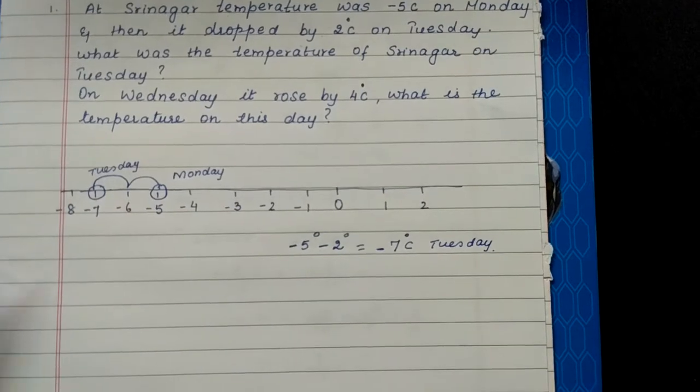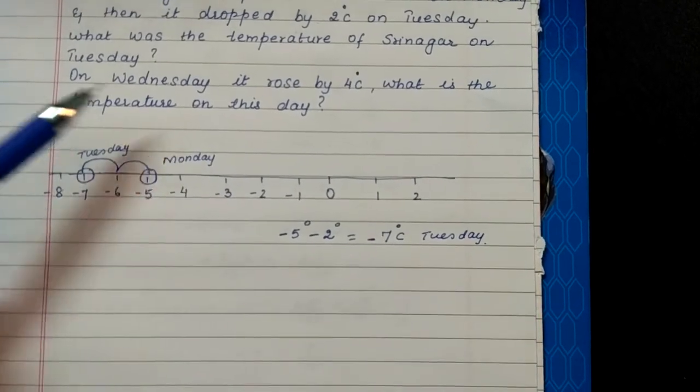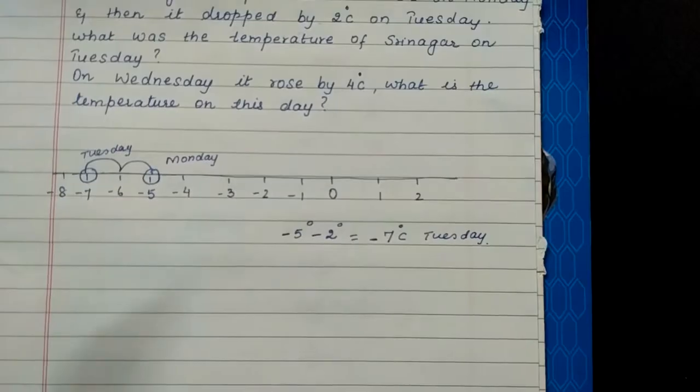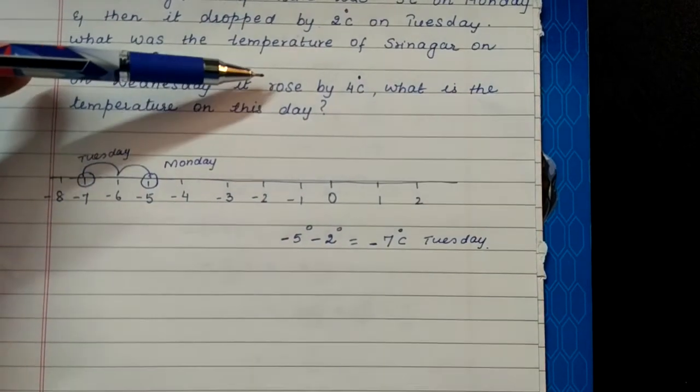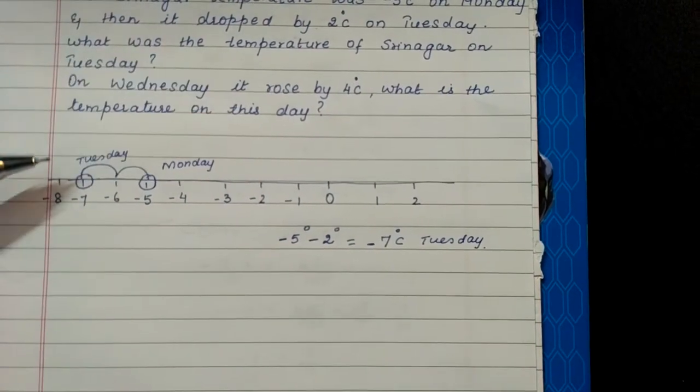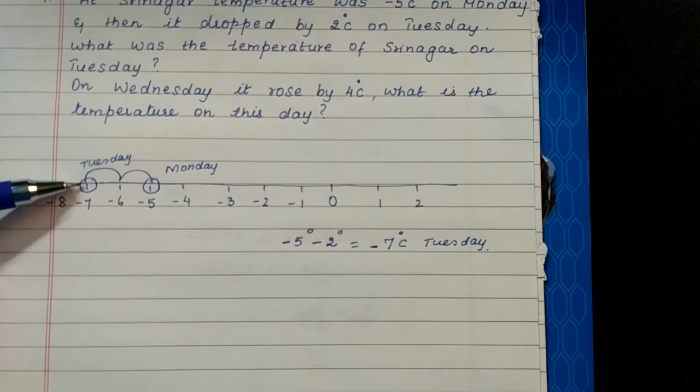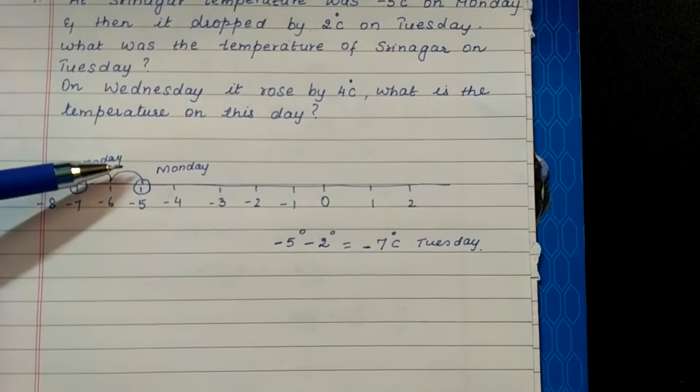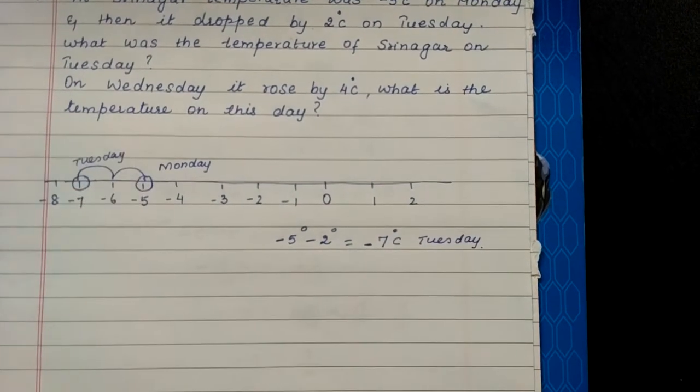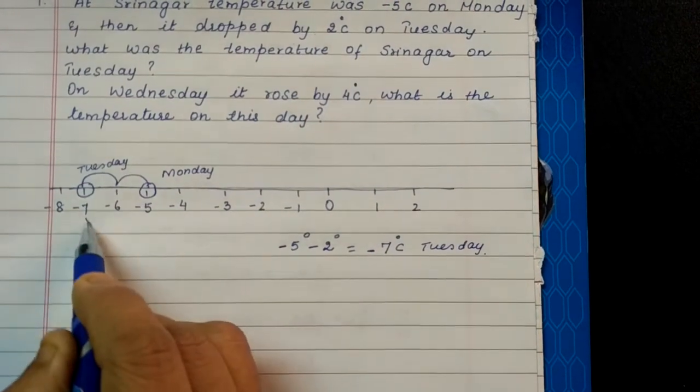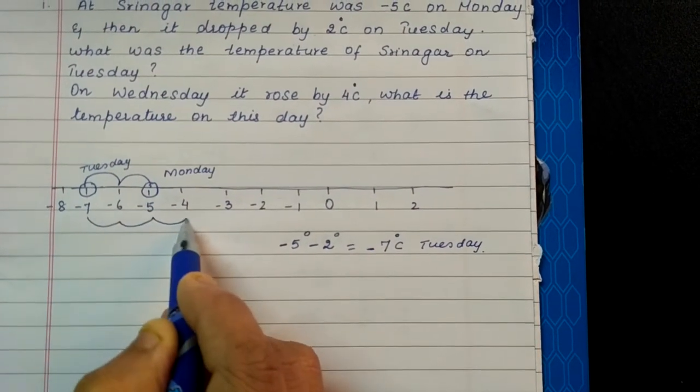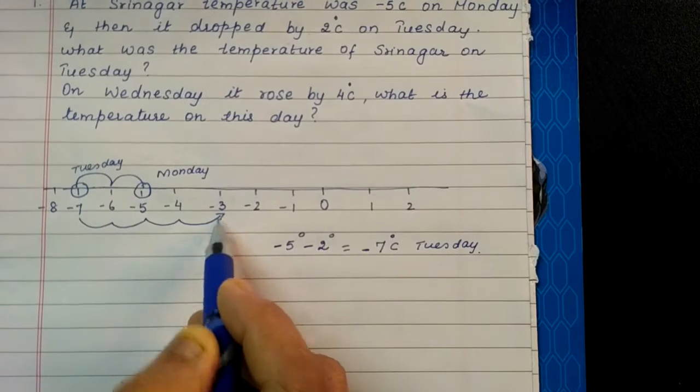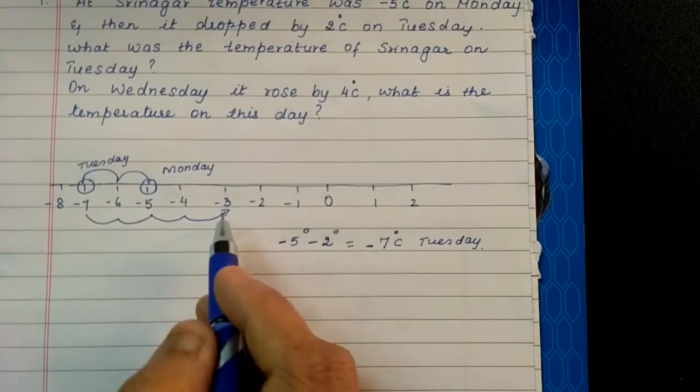Your next question is, on Wednesday it rose by 4 degrees Celsius. So rose means what? It increased. Increased means plus. So when the temperature is minus 7, it again increased by 4 degrees. So you have to move towards your right on the number line. So 1, 2, 3, 4. So the temperature on Wednesday is minus 3 degrees.